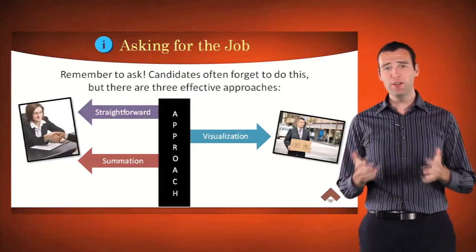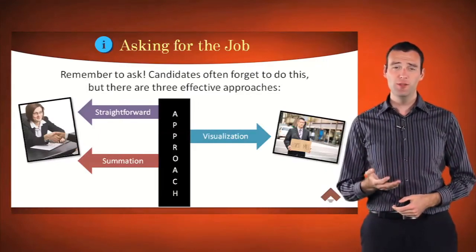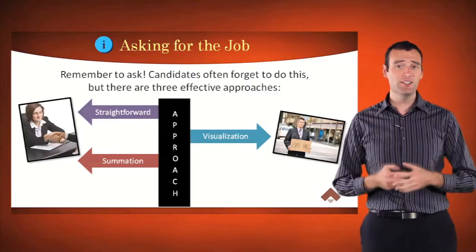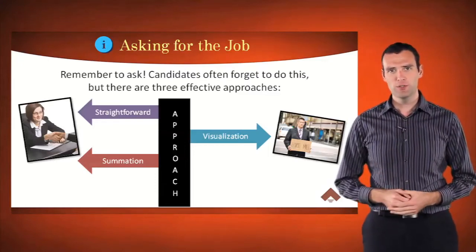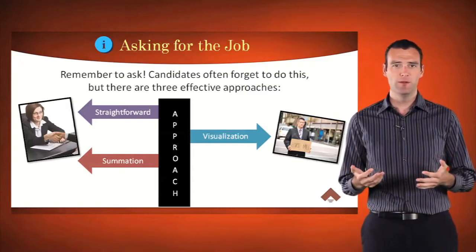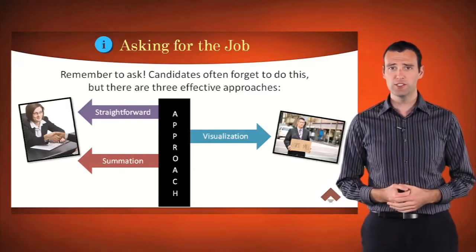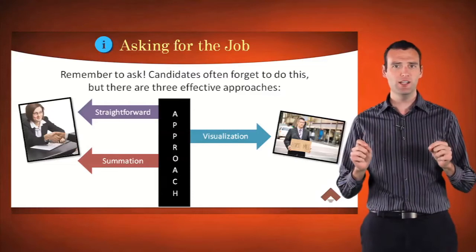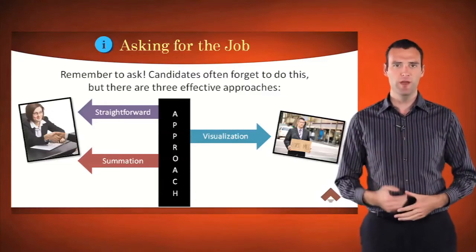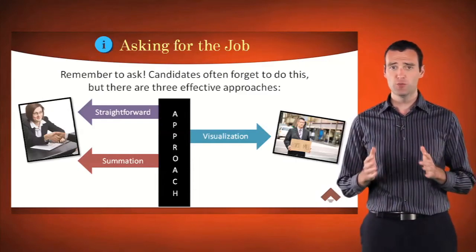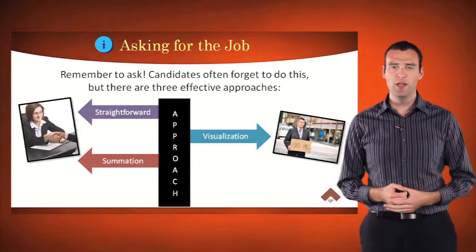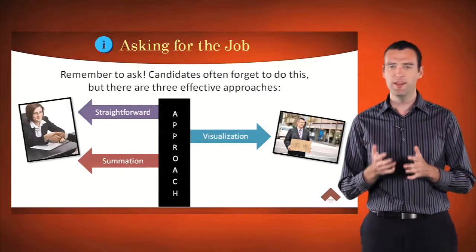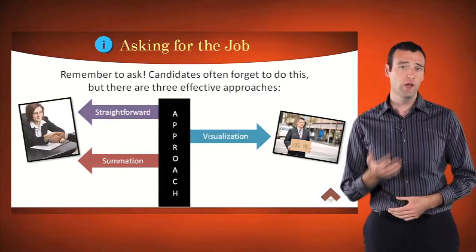Now, how do you ask for the job? Remember, when you want the job, you must make that fact known. Be direct. Candidates often forget to ask for the job. On this slide, we'll present three effective approaches for asking for the job. The straightforward approach directly expresses your interest in the position. The summation approach is where you connect the dots for them, emphasizing a mutual benefit. Lastly, the visualization approach is where you talk as if you're already a part of the team. Instead of saying "your company," you would use pronouns such as "our company," "we," and "us." Let's go over each of these three methods in greater detail.